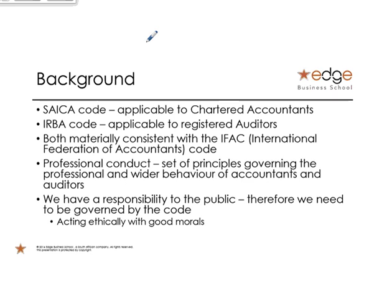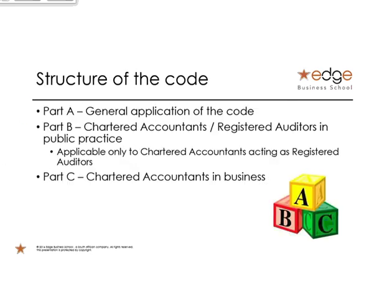Three pieces of cake with one spoon — that's the best type of cake. The main focus will be on Part B. You're an auditor and things come up. However, you could have someone at the client that is a CA. You'll know that they're a CA because you'll see their name with the designation just behind it, and they also need to apply the code.